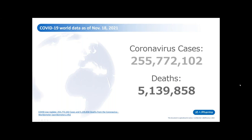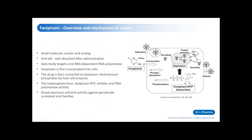Before we get into the subject of antiviral therapies, it's important to note that more than 255 million cases of coronavirus have been confirmed to date with more than 5.1 million deaths. A good place to start this discussion would be on favipiravir — what kind of drug this is and what sort of mechanism of action this particular oral antiviral offers.